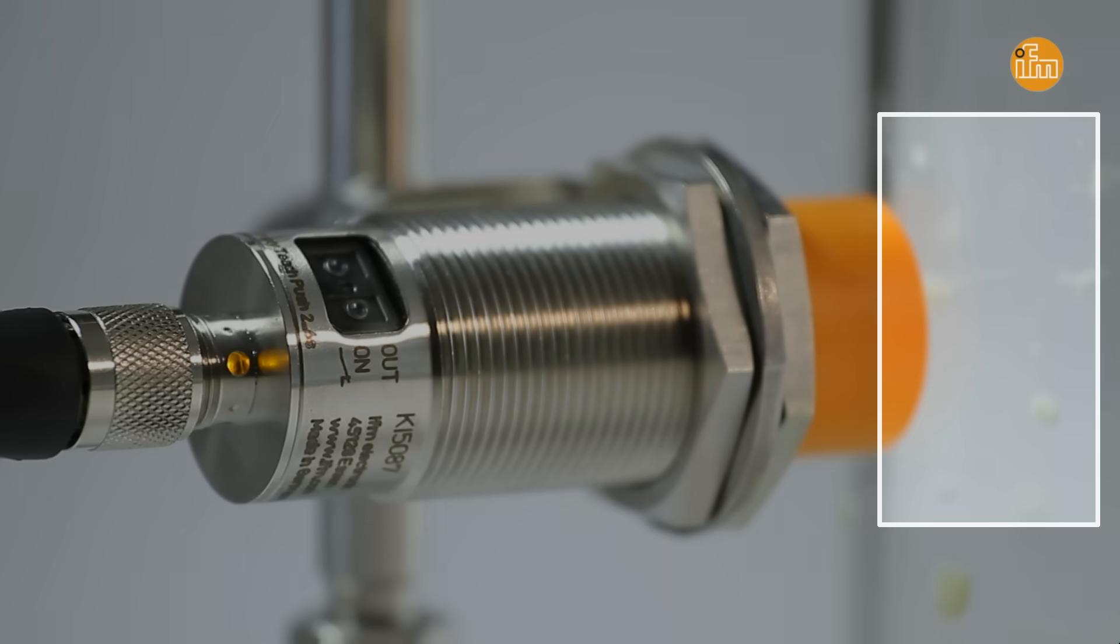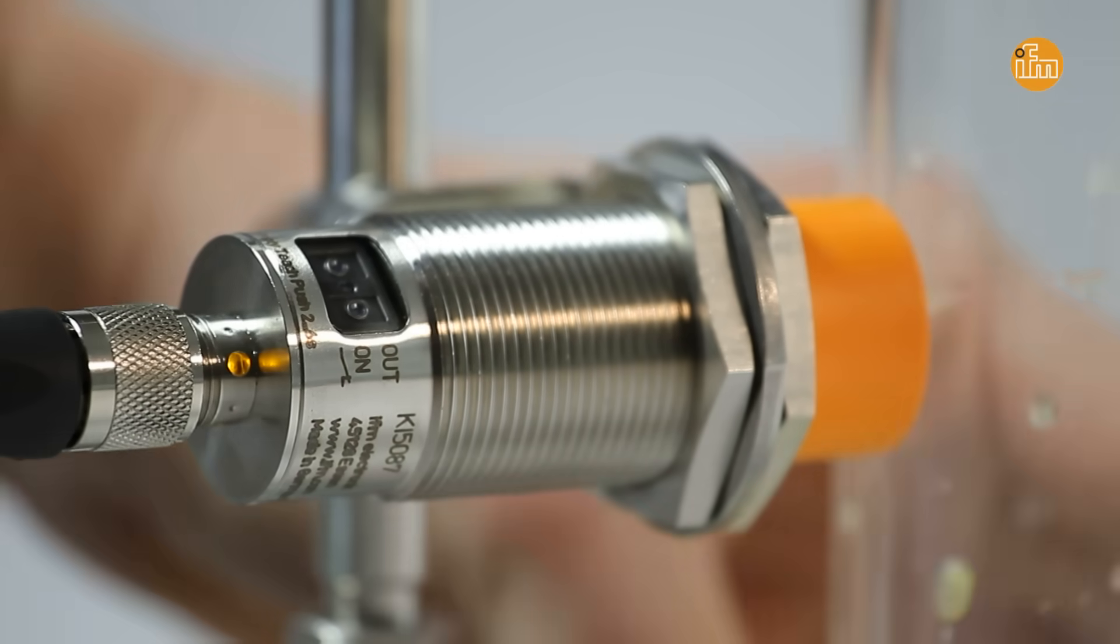Capacitive sensors, however, do not switch off if there are residues, for example, of orange juice.